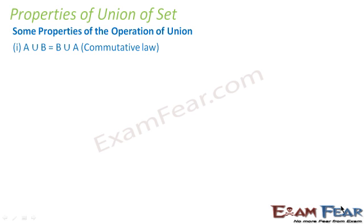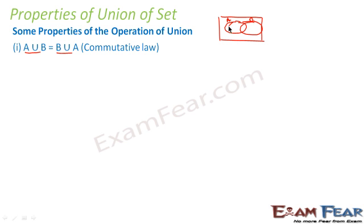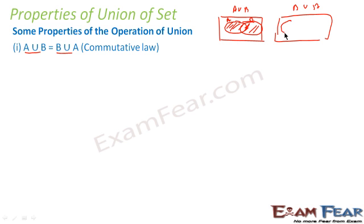Some of the properties of union of sets are: first, the commutative law — A union B equals B union A. We can prove this using a Venn diagram. When we say A union B we get a shaded region, and when we say B union A we get the same region. So A union B and B union A are the same; commutative law holds true for union of sets.